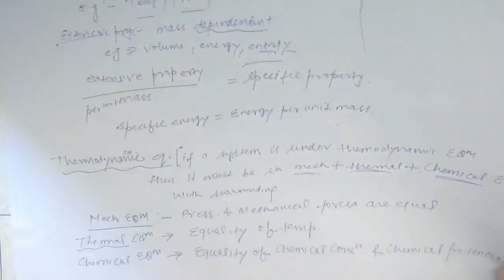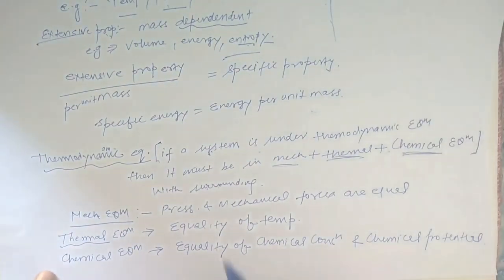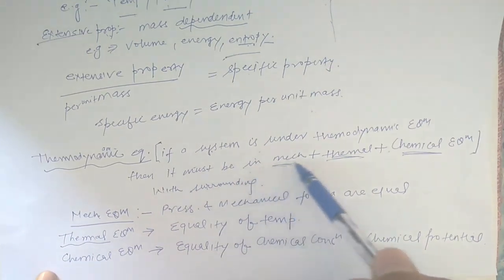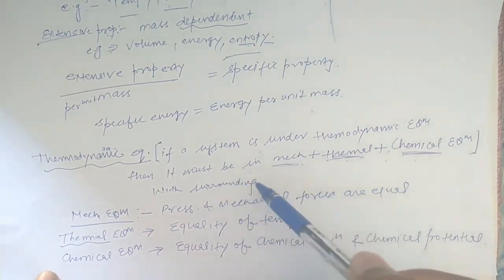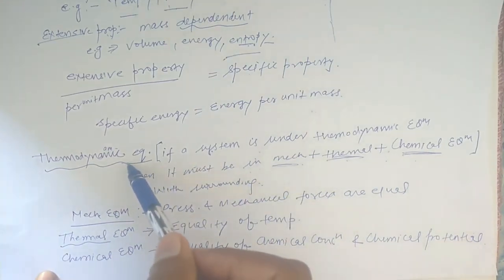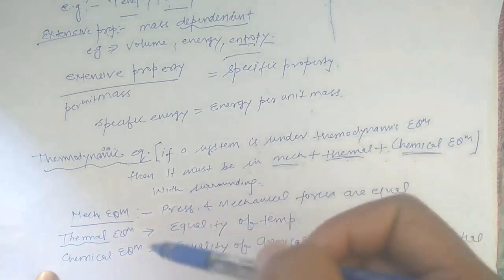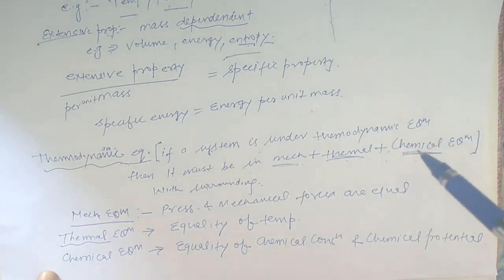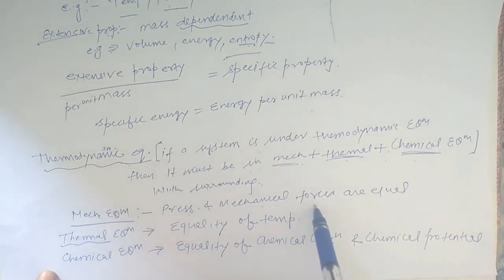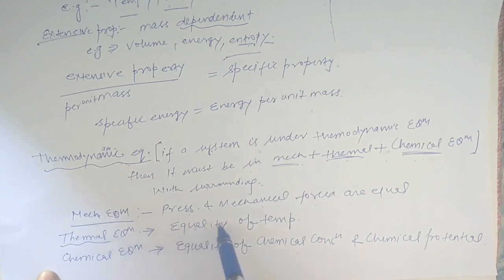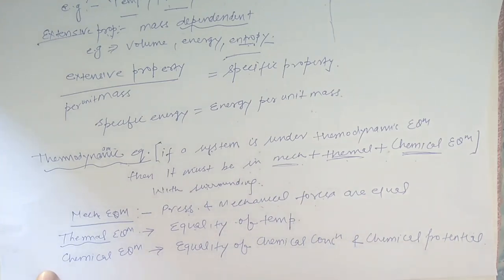Now let's discuss thermodynamic equilibrium. If a system is under thermodynamic equilibrium, then it must be in mechanical, thermal, and chemical equilibrium with the surroundings. In mechanical equilibrium, there must be equality of pressure and mechanical forces. In thermal equilibrium, there must be equality of temperature. In chemical equilibrium, there must be equality of chemical concentration and chemical potentials.